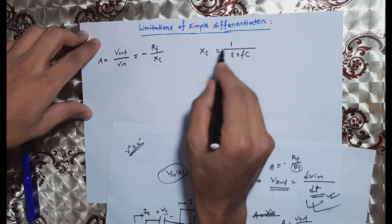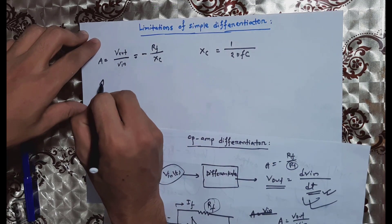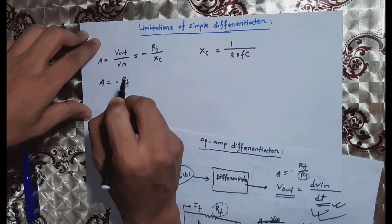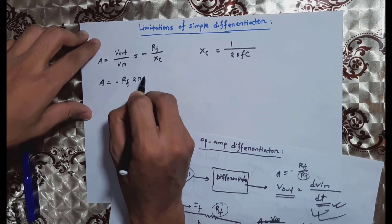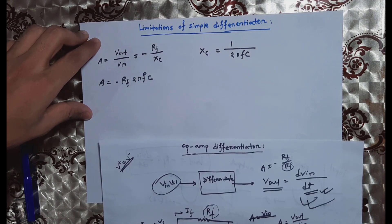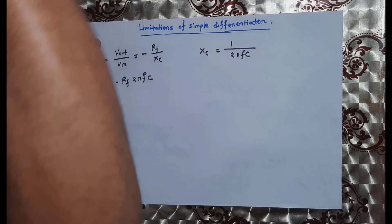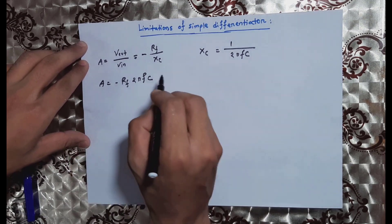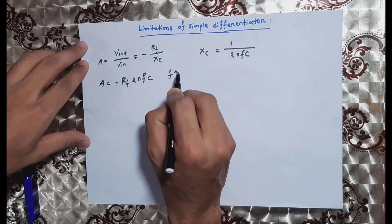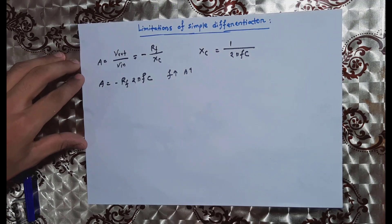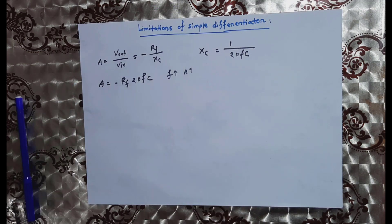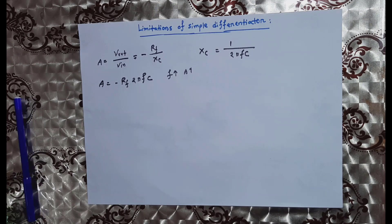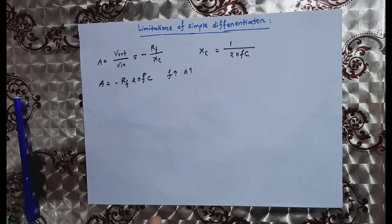Since Xc equals 1 divided by 2πfc, the gain becomes minus Rf times 2πfc. Now let's go to the frequency response of the differentiator.